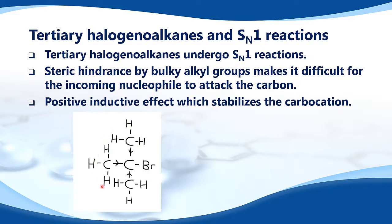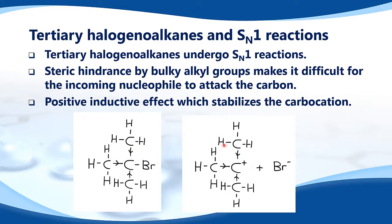Here we have a tertiary halogenoalkane. These bulky alkyl groups make it difficult for the nucleophile to attack the carbon. These arrows show a positive inductive effect, which makes the carbocation — which is here — stable.